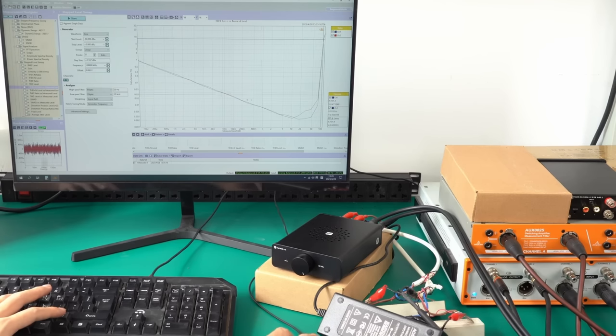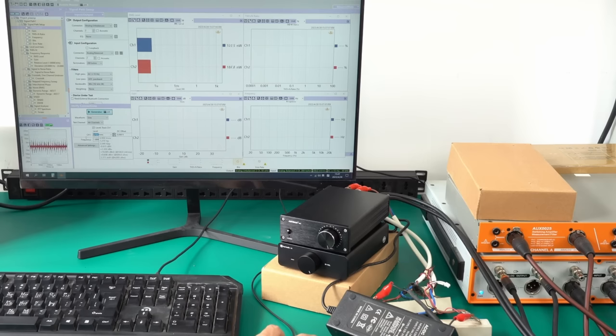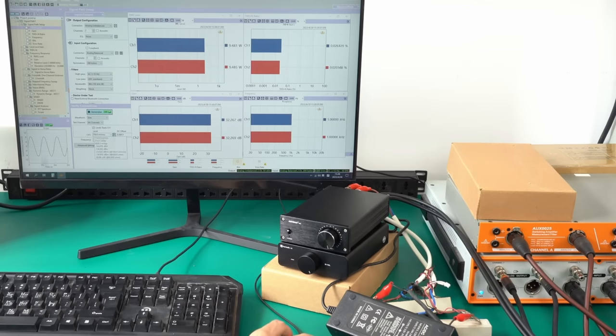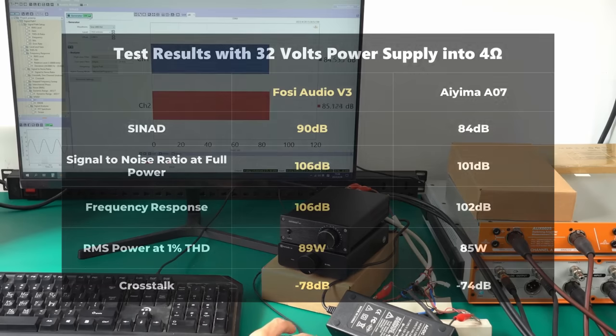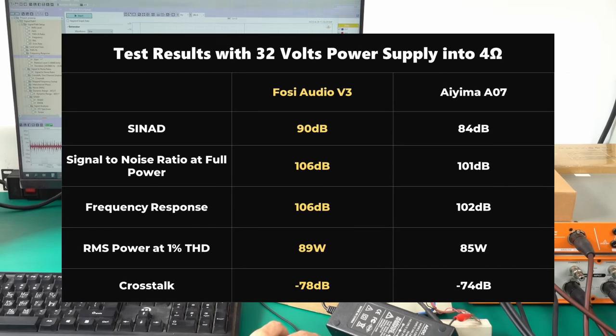Under the same conditions, I'll test the parameters of the A07, the older amplifier. Lastly, I'll compile the results of these two amplifiers into a table. On the whole, the V3 outperforms A07 in terms of parameters.